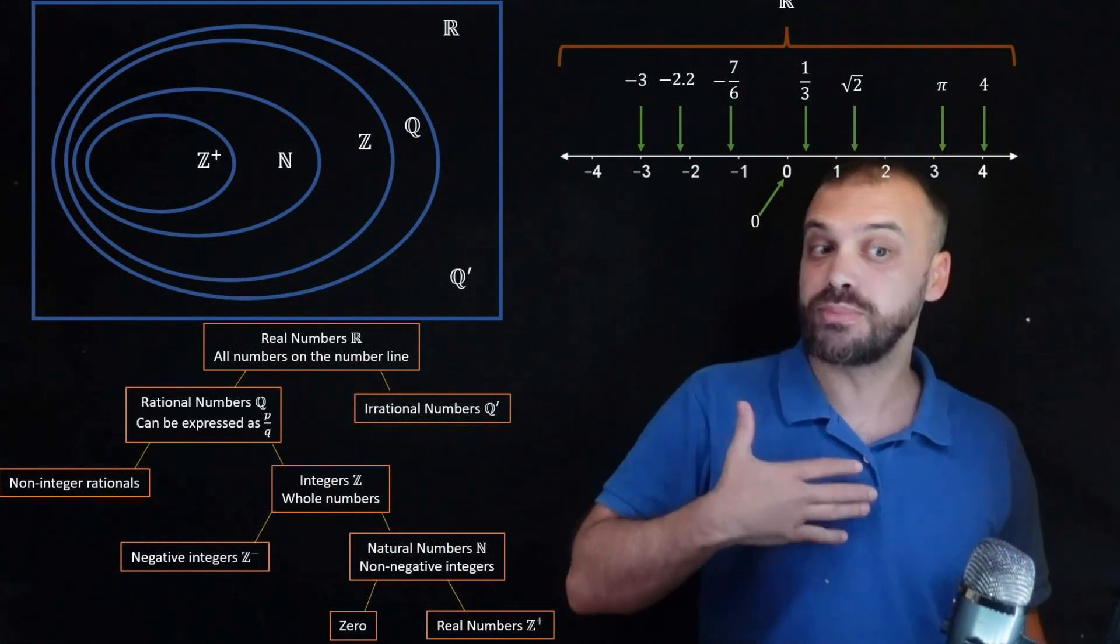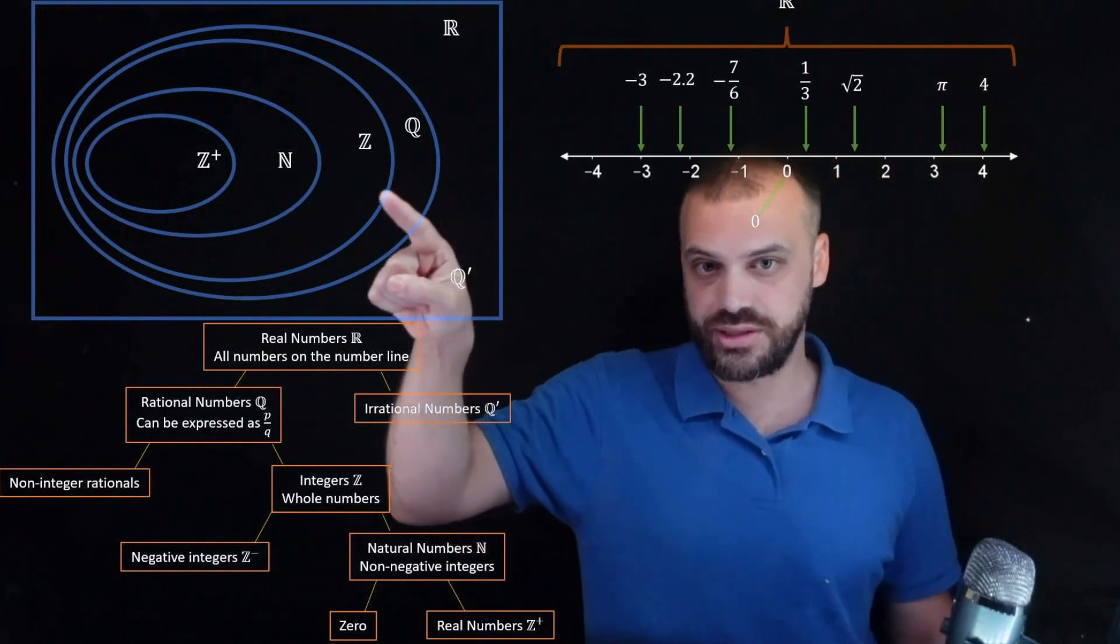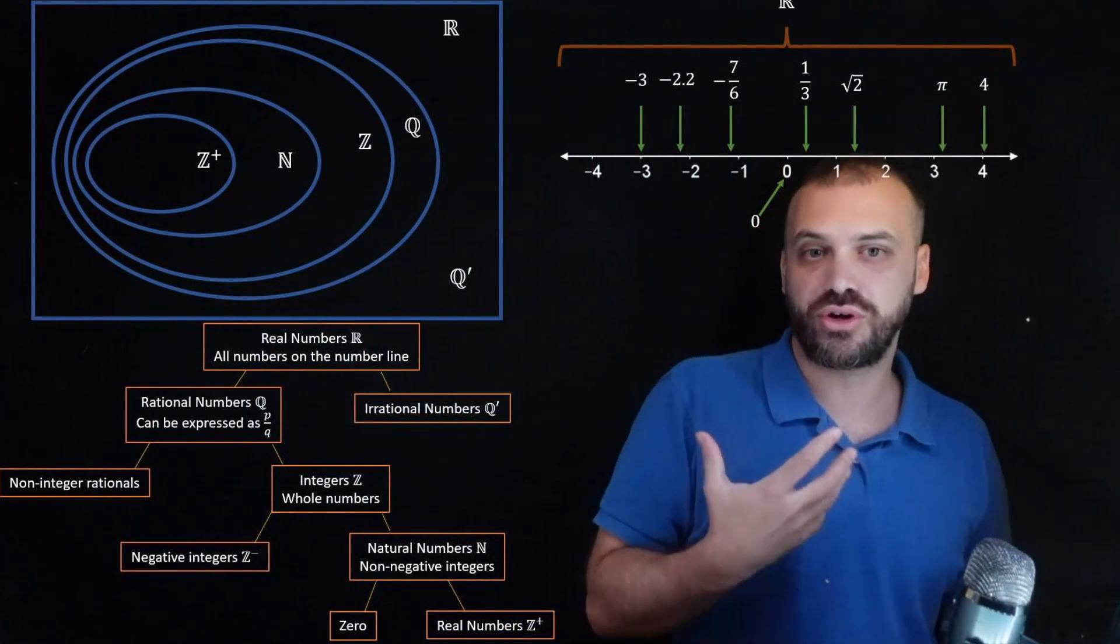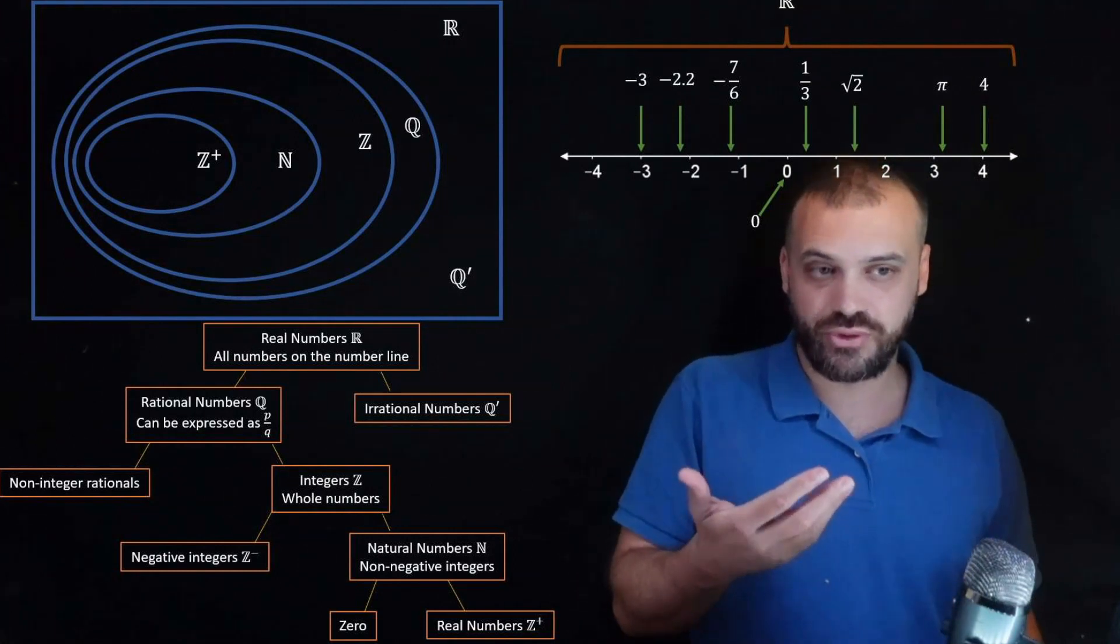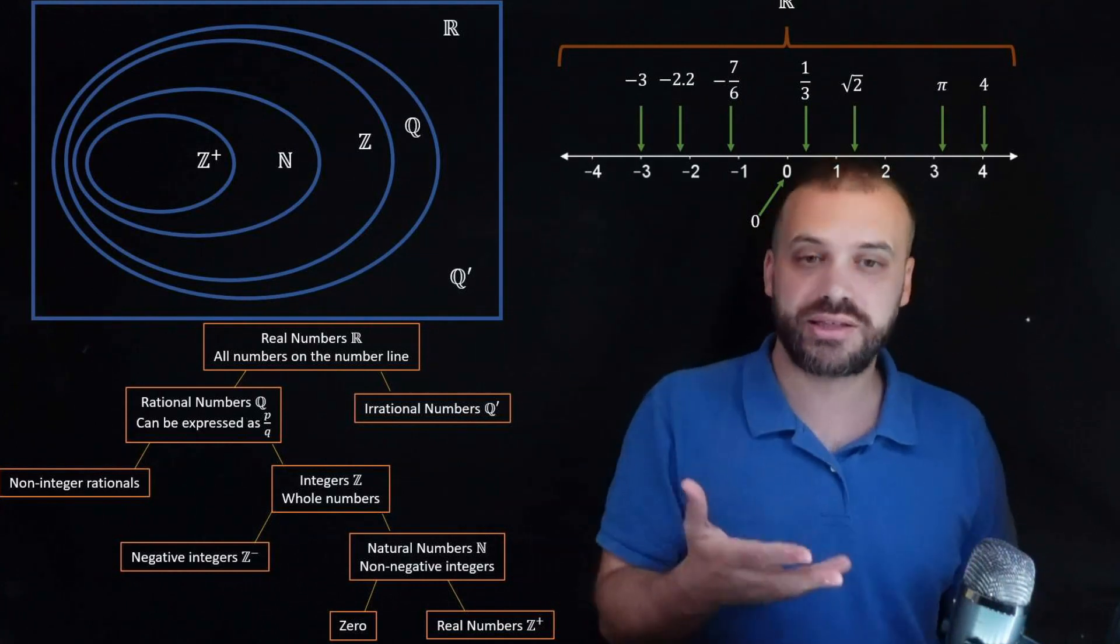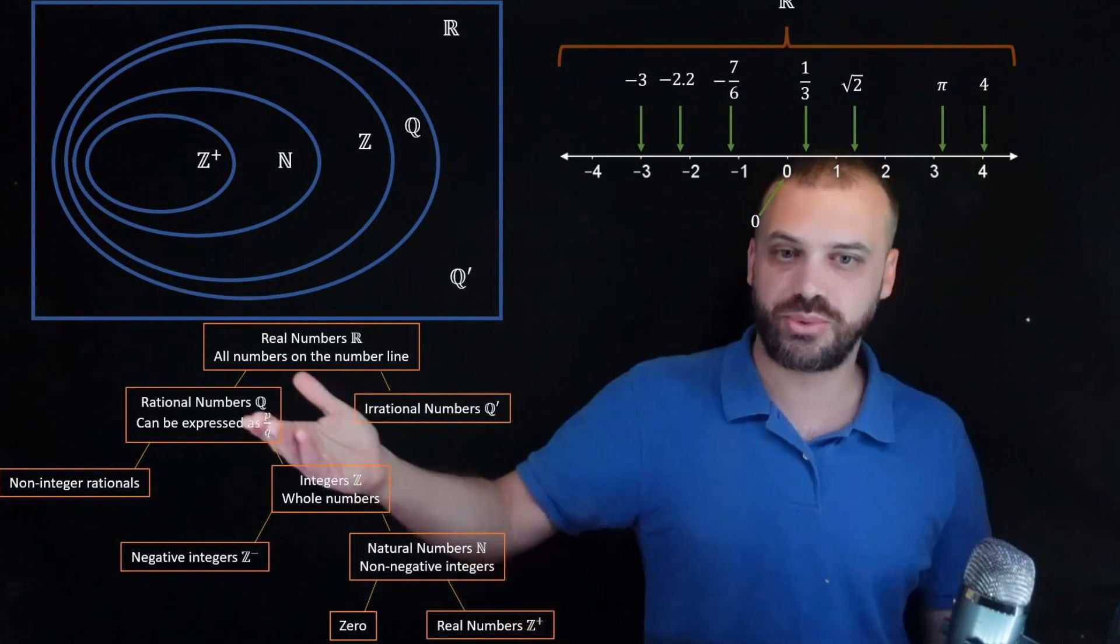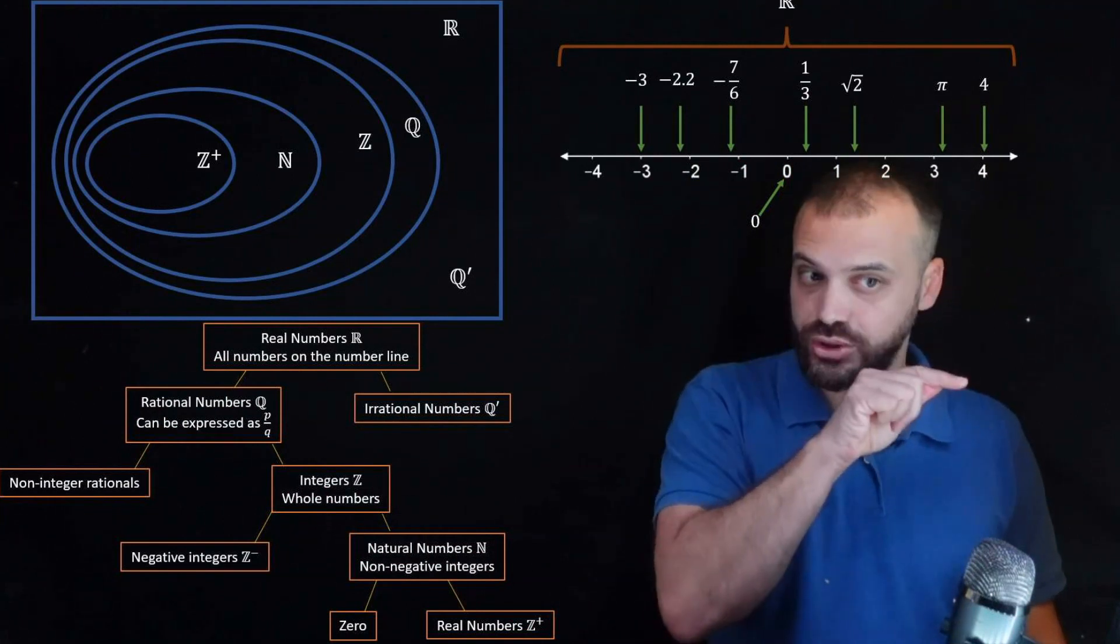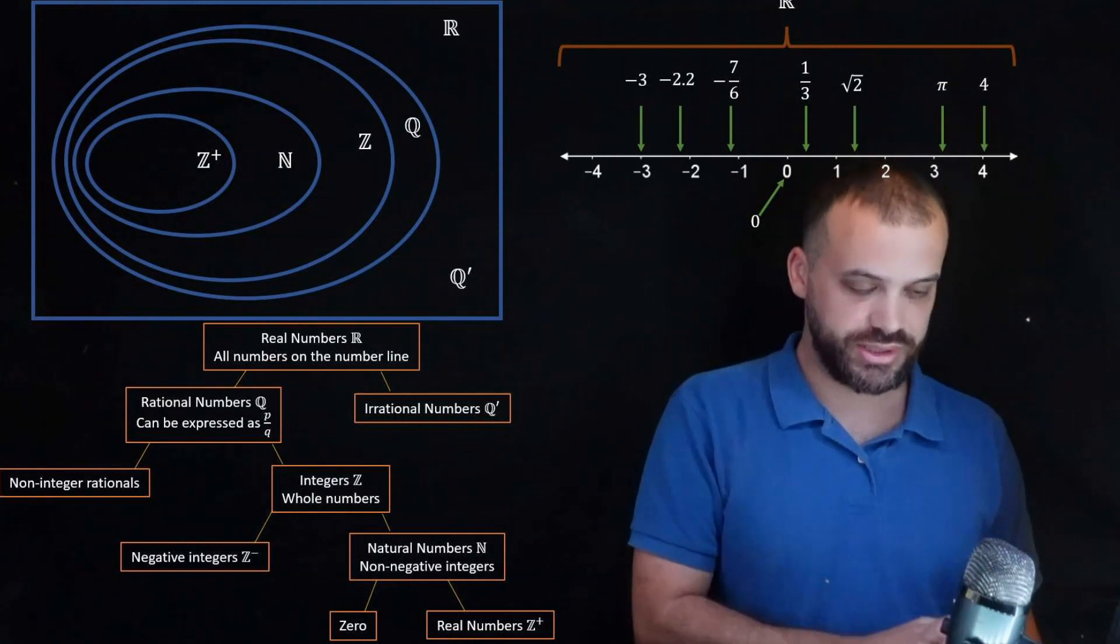Because when it comes to mathematical language, you're going to see these things written, all of these things written, in various mathematical problems, and if you don't know what N stands for, if you don't know what Z plus stands for, you're not going to be able to read that mathematical sentence. And if you want to explain something to someone, you don't want to have to write the word out, the real numbers out, you don't want to have to write out rational numbers, you want to be able to just write Q. Okay, that is the real number system.